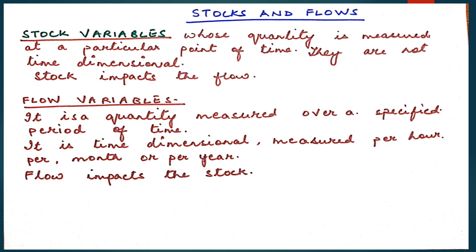The difference between stocks and flows: stock variables are those whose quantity is measured at a particular point of time — they are not time dimensional. For example, as on January 1st 2019 your bank balance was rupees 15,000. Examples of stock variables include wealth and water in the overhead tank. Water in the overhead tank impacts the flow — the greater the water in the tank, the greater would be the flow of water in our taps.